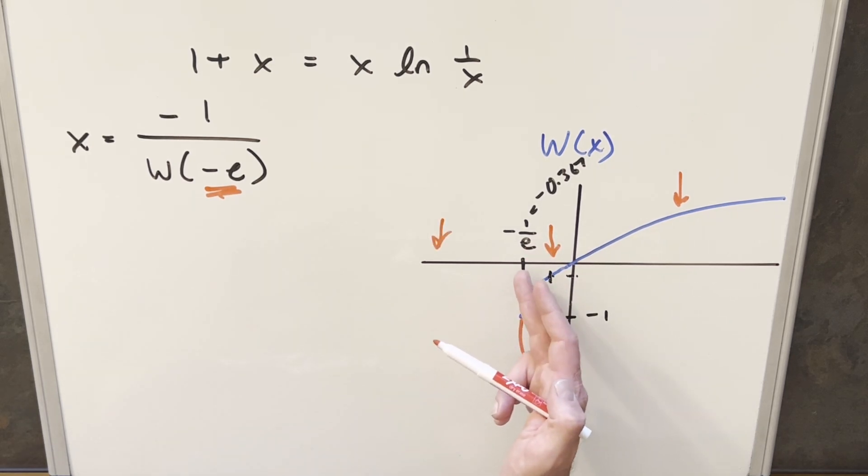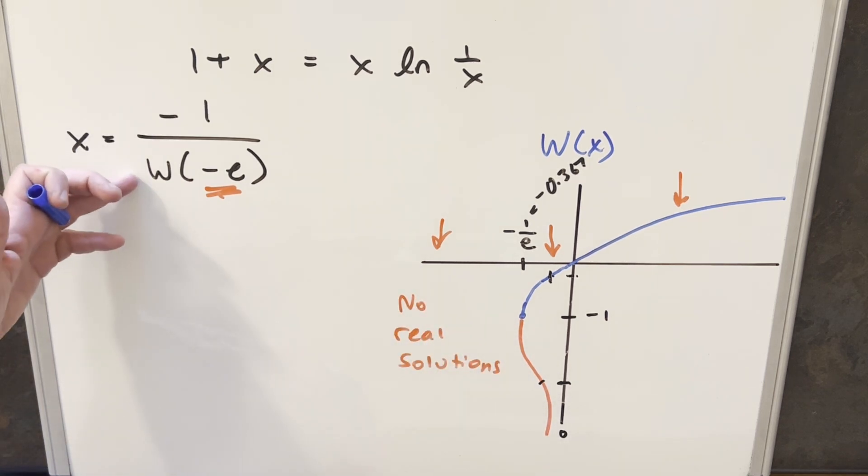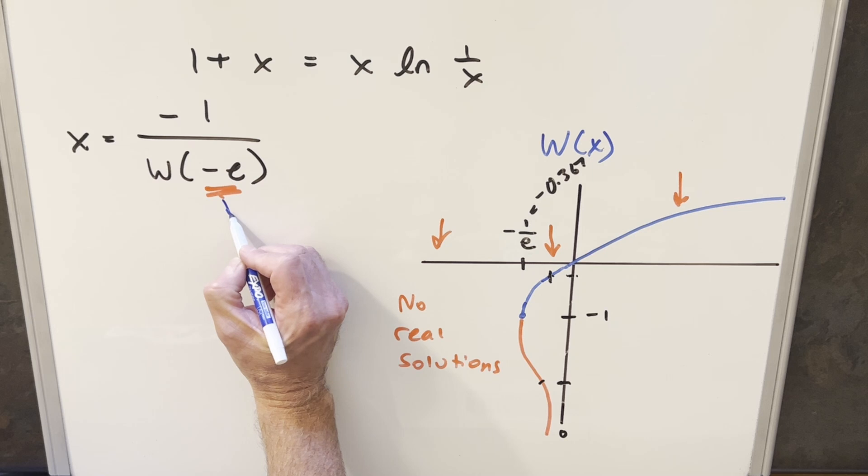two real solutions, just in this little sliver between zero and minus one over e. And all the way out here, anything less than minus one over e for our input, that's going to be no real solutions out this way. So in order to evaluate our answer and try to do something with this, we just need to look at minus e.